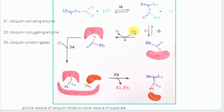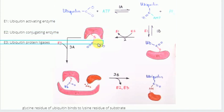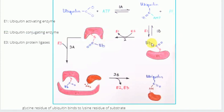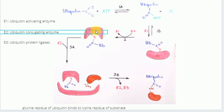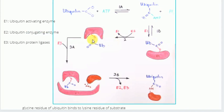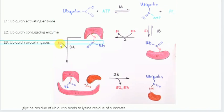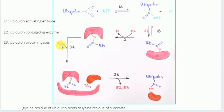Then the E2 enzyme, which are the ubiquitin conjugating enzymes, will shuttle this active ubiquitin molecule — colored in blue — to the cysteine residue of the E2 enzyme. After this process, the active ubiquitin molecule will be shuttled to the cysteine residue of the E2 enzyme.